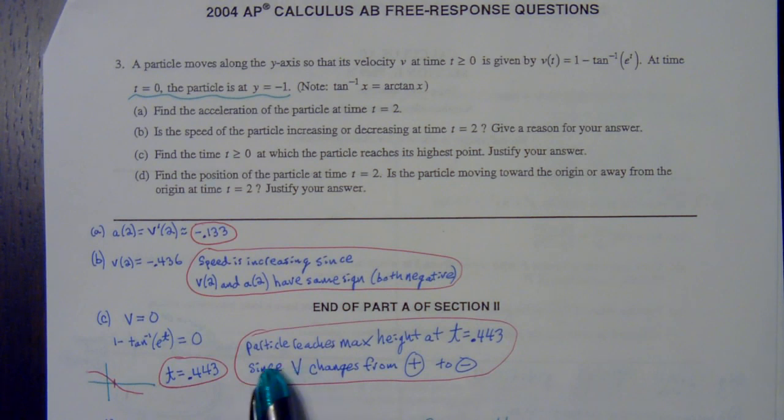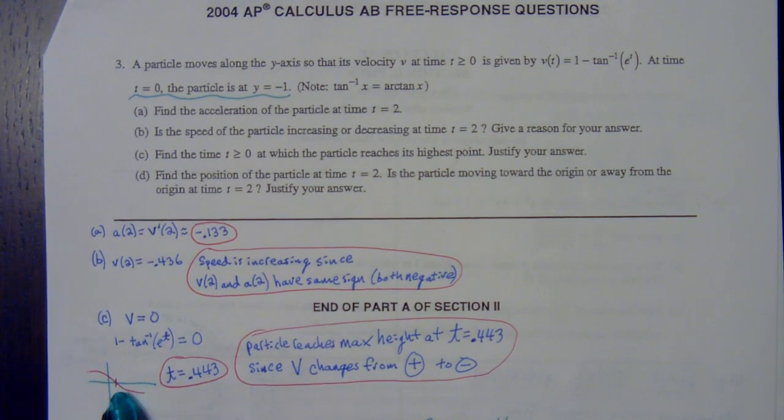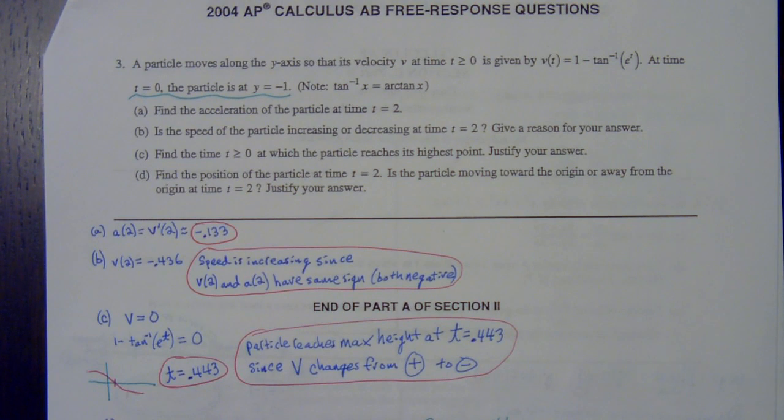We've got a max height at that number since the velocity changes from positive to negative. When they say justify your answer on a max or min problem, that's the language they want to hear. This graph is also supporting that the velocity changes from above to negative. If the graph would have gone from below to above, then the velocity changes from negative to positive, and that's going to be a minimum height.